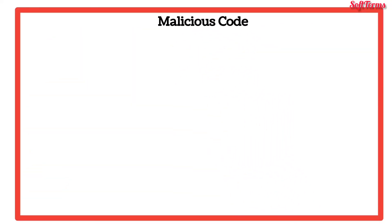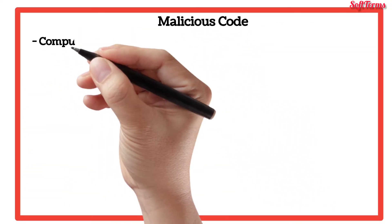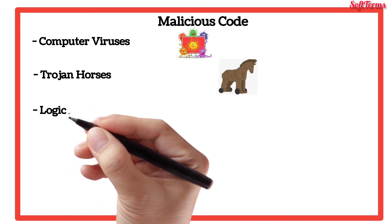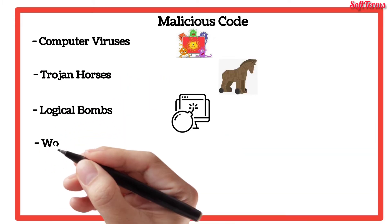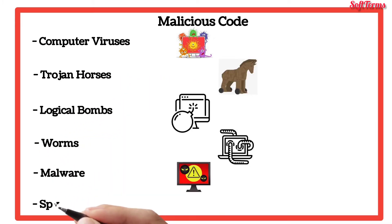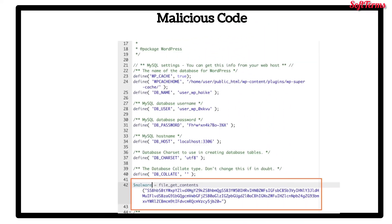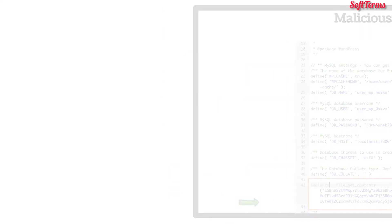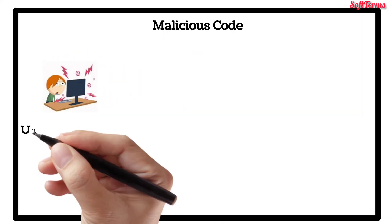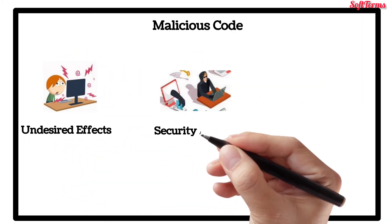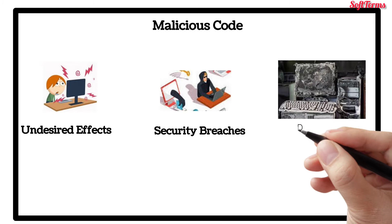Welcome to Malicious Code and its different forms, including computer viruses, trojan horses, logical bombs, swarms, and malware or spyware. Malicious code is a term used to describe any code in any part of a software system or script that is intended to cause undesired effects, security breaches, or damage to a system.